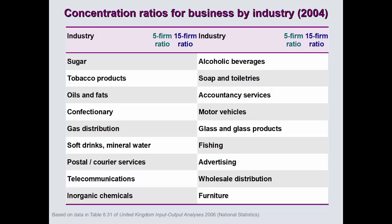In practice, we assess how monopolized an industry is by looking at concentration ratios. The most commonly used is the five-firm ratio: we take the five largest companies in a specific industry and measure their market share relative to the whole market. For example, the sugar industry is dominated by the top five firms at 99% market share, and the tobacco products industry is similarly dominated at 99% — making these more like monopolies, though they could also be considered oligopolies.